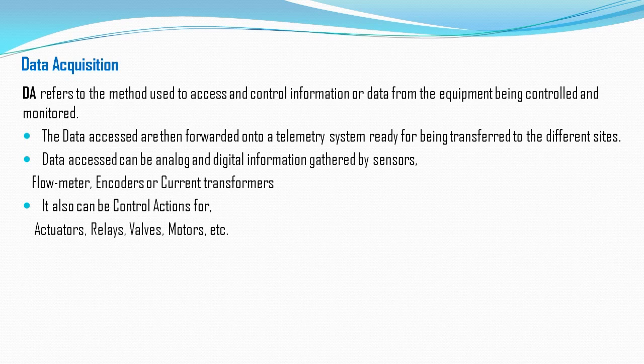Data access can be analog or digital. For example, the on and off condition of a motor is a digital signal, while level, temperature, and flow are analog signals. There can also be control actions — for actuators, relays, valves, and motors — such as starting up or stopping a motor. These are all control actions.